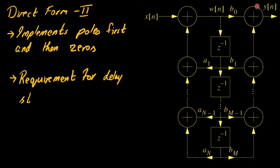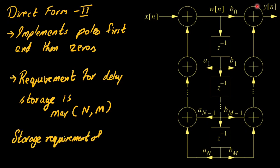As far as the storage requirements is concerned for delays we will need maximum of n comma m storage elements rather than n plus m in type 1 case whereas for coefficient storage it is still m plus 1 plus n in both the cases that is type 1 and type 2.